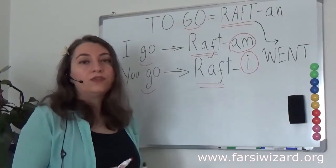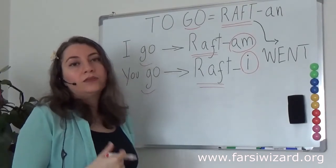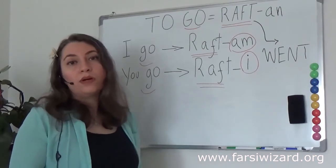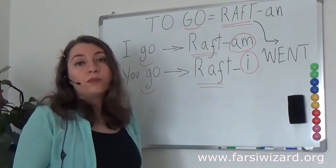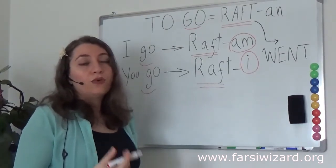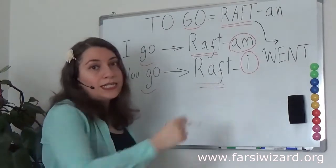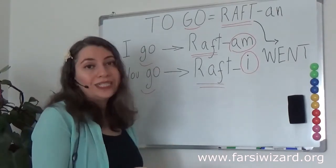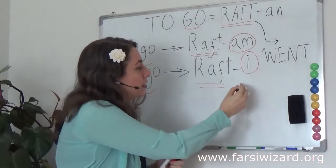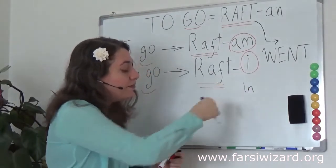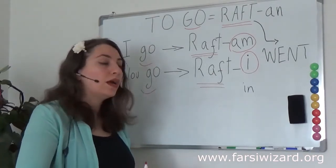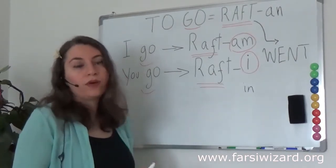Remember that in Farsi we have two versions of you. Either we're talking to someone informally, a friend or family member, or we talk to a person formally, for example if you're talking to someone who's older than you. In the case of formal you, the ending is not 'e,' the ending will be 'in.' So if you say 'raftin' this means you formal went or you plural went.